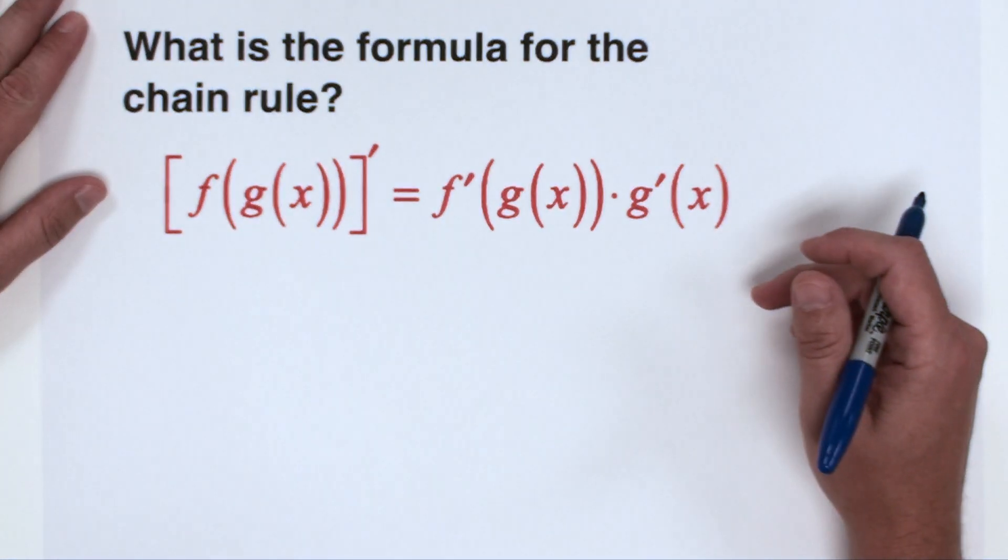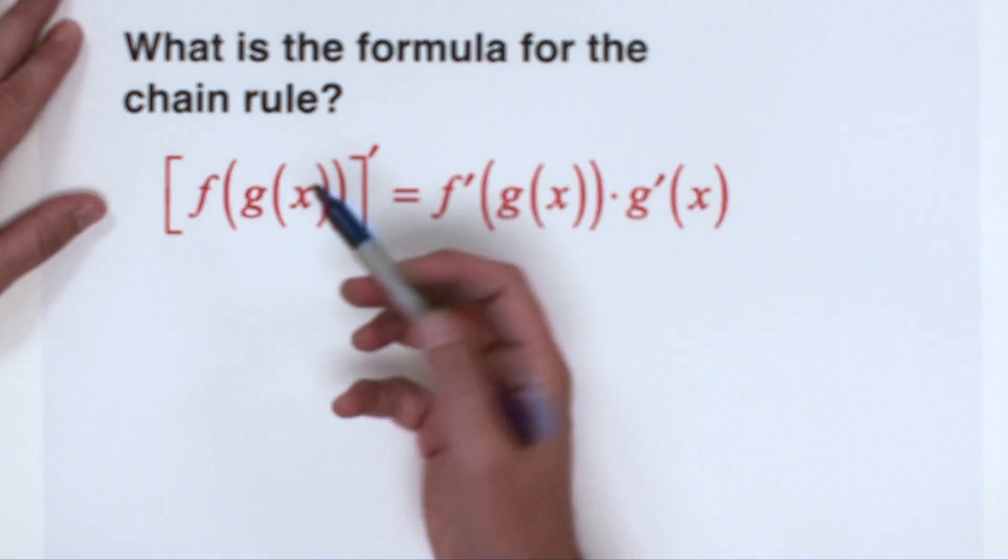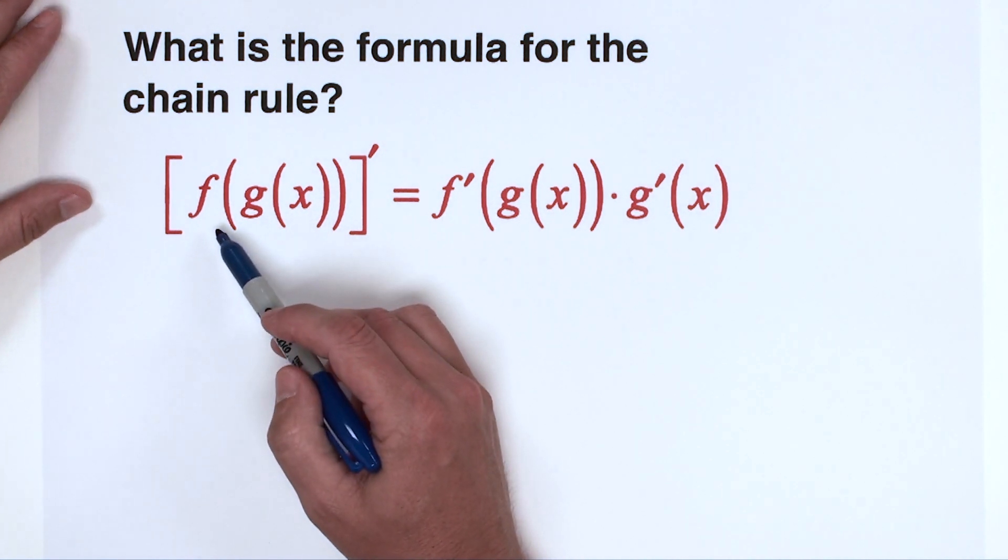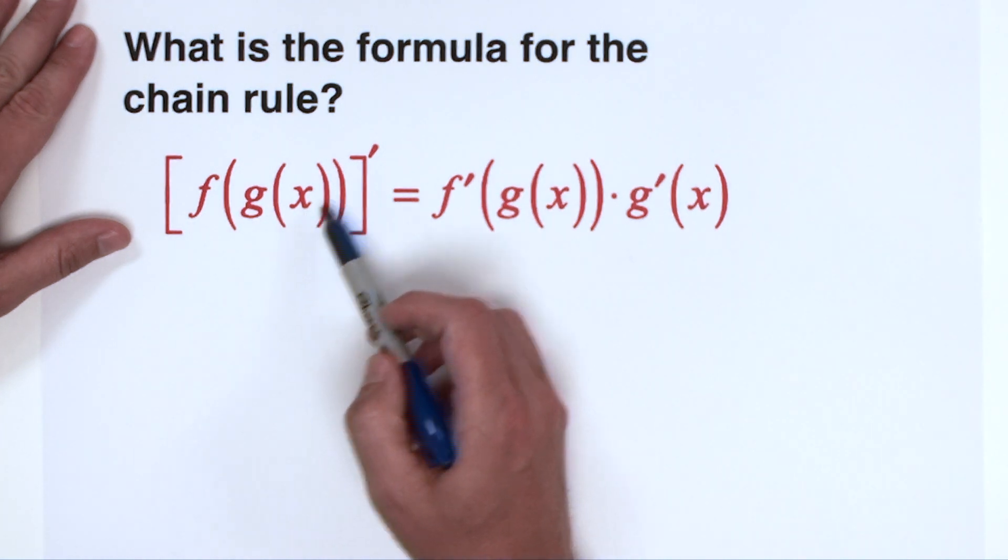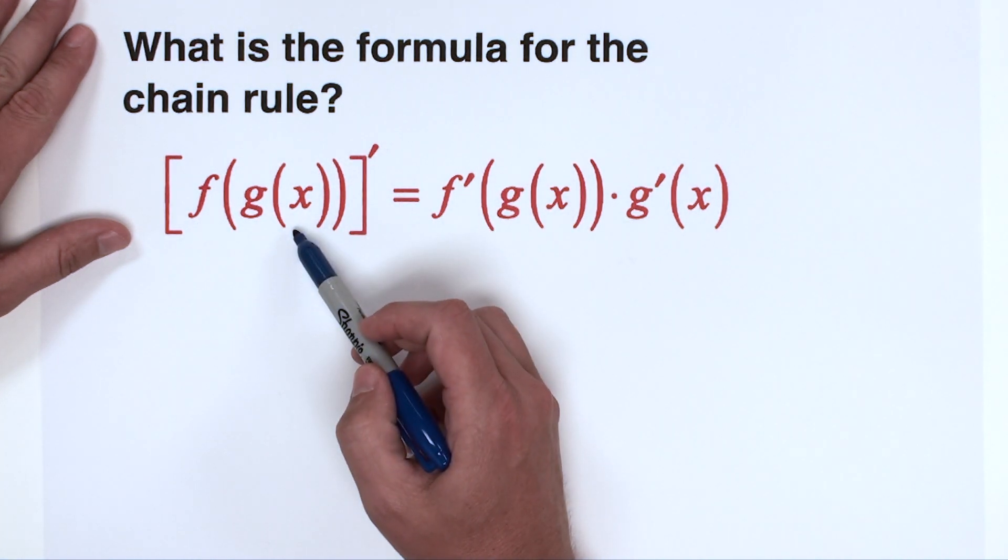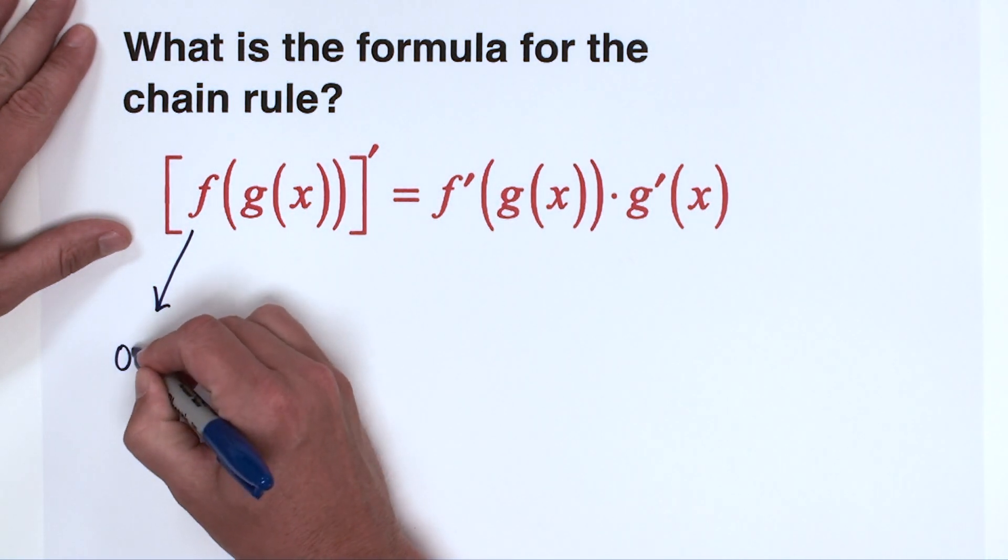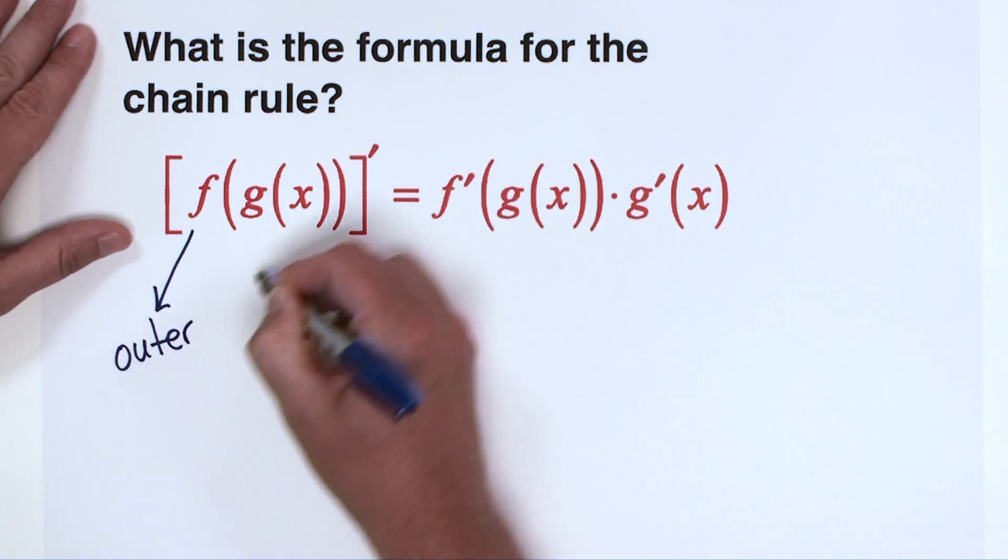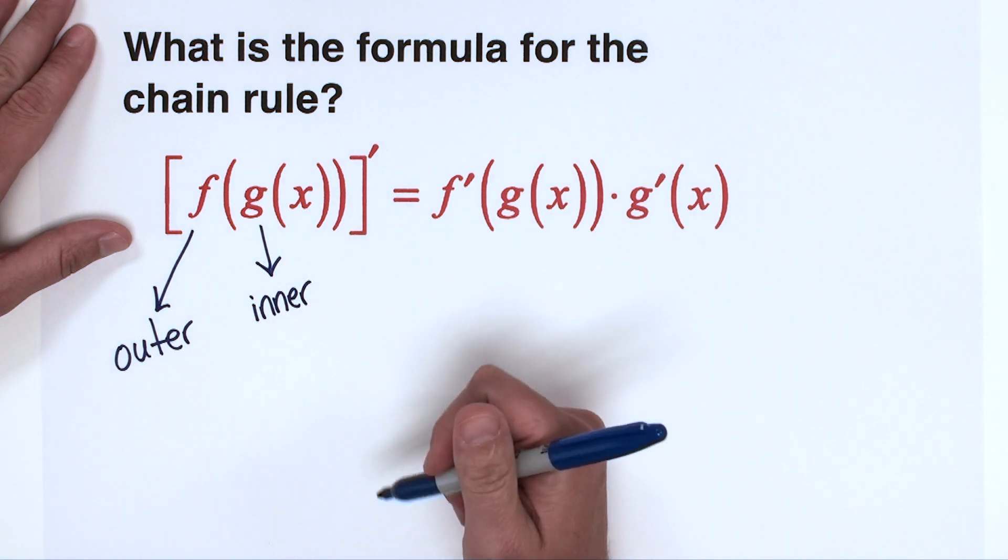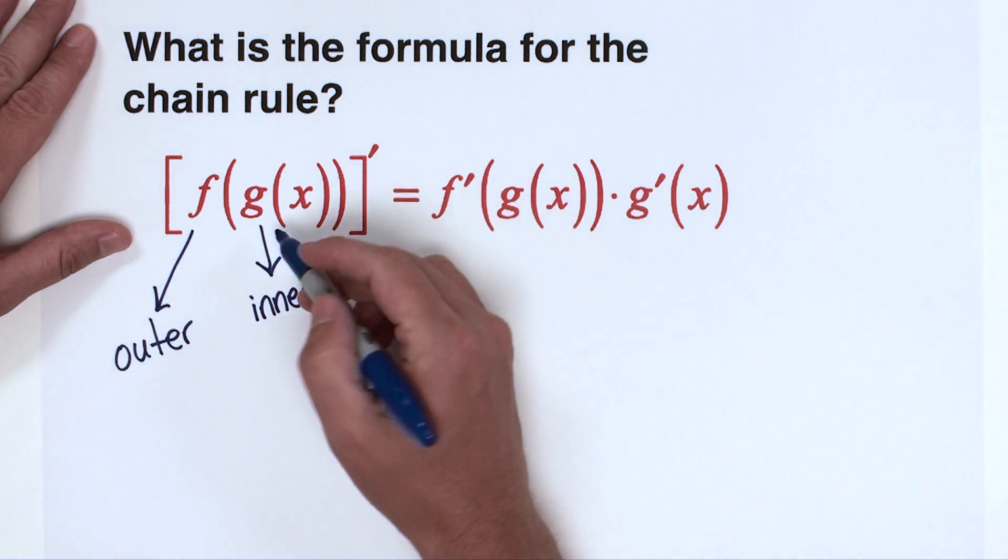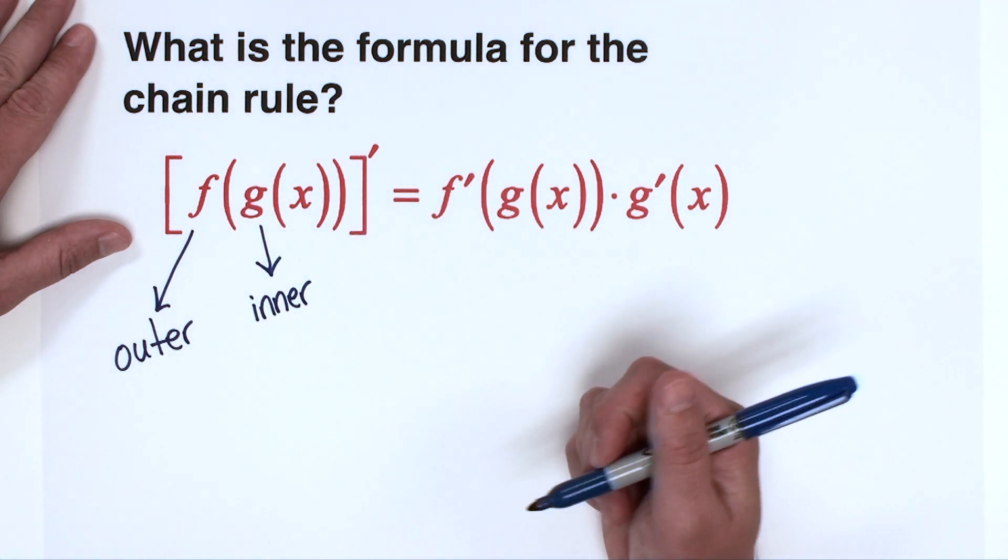Okay, so the formula for chain rule, right? How are we going to take the derivative when we see this composition? So here it is. We've got this notation that you should be familiar with f of g of x and we want to find the derivative of f of g of x. Now notice here that there is what I would term an outer function and an inner function. Okay, or outside inside. In other words, the g of x function is inside of the f of x function.